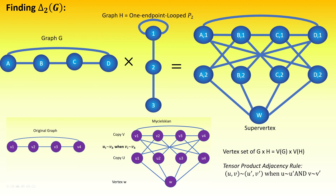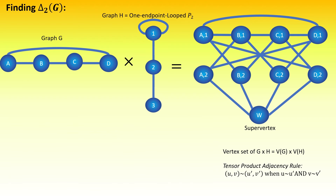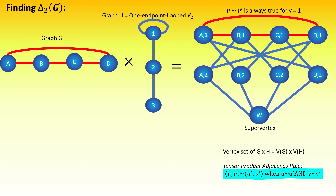I'd like to point out a few things about this construction. First, notice that all of the vertices with right entry equal to the looped vertex, vertex 1, make up a copy of g. This is because the right entries of these vertices are the same self-adjacent vertex 1 in h, meaning their adjacencies between each other depend only upon the adjacencies between their left entries — that is, the adjacencies in graph g.